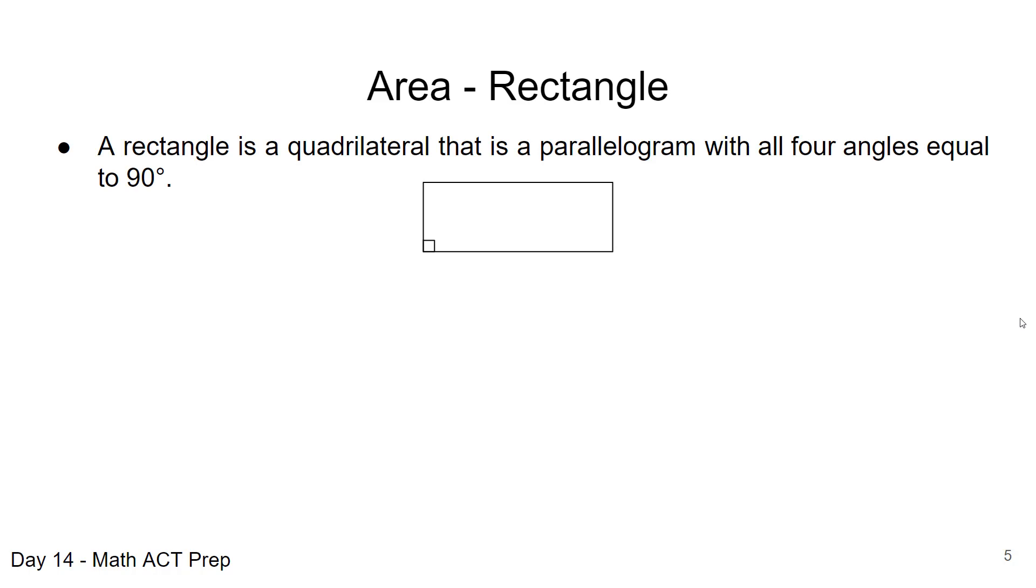When we're looking at a rectangle, let's remember that a rectangle is a quadrilateral. Quad meaning four, four sided, that is a parallelogram with opposite sides parallel, with all four angles equal to 90 degrees. That's a rectangle.